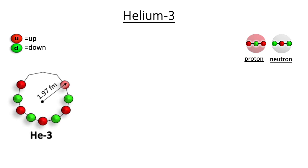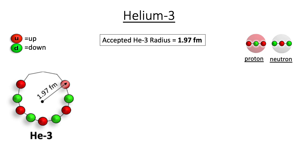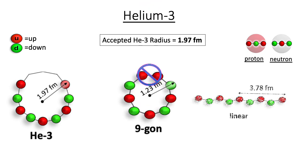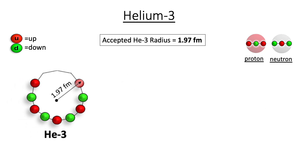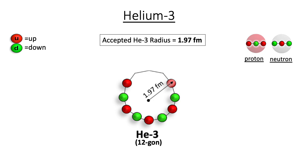Similar reasoning yields the alternating quark structure of helium-3, which predicts a radius value of 1.97 femtometers. This is an identical match to the currently accepted RMS charge radius value, and superior to both the nine-gon and linear geometries. The best fit structure for helium-3 is also a U-shaped structure, where quarks occupy nine of the twelve vertices of a dodecagon.